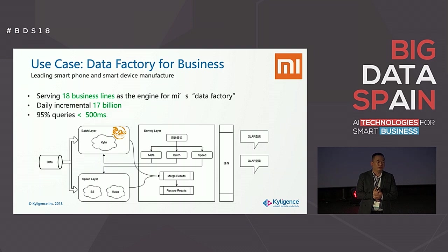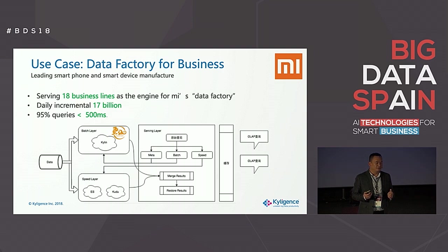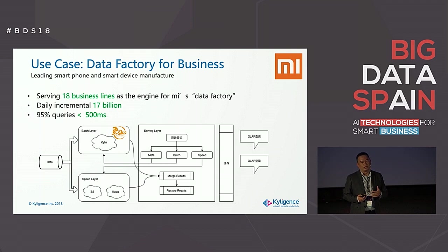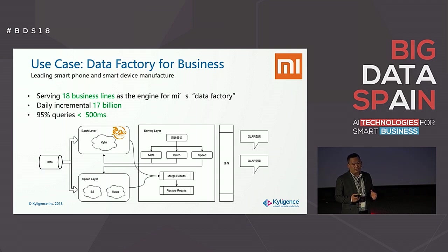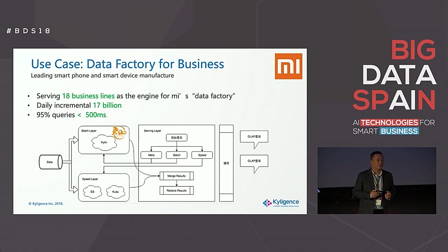Another use case is Xiaomi, the smartphone vendor. They process smartphones and other smart devices — very popular globally. They have more than 80 business lines today relying on our technology. They built something they call a data factory — a very interesting name — to gather data, do calculation, and serve different business scenarios. The Kylin part focuses on the batch analytics. They also use Kudu for streaming. They will publish a use case later. By the way, most major smartphone vendors are already our users — Huawei, Xiaomi, Oppo, Vivo — most of the top smartphone vendors are using our technology to get insight from their data.